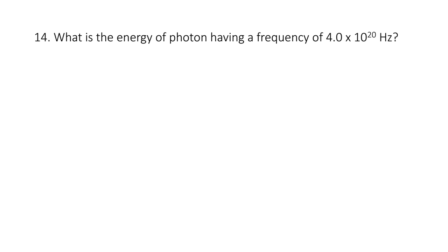What is the energy of a photon having a frequency of 4.0 × 10²⁰? E = hν. Now, in the original notes I gave you 6.626 × 10⁻³⁴ as Planck's constant, but for some reason I started using 6.62. We have to go back to the correct number — 6.626 — because that's what I used for the test calculations. If you use 6.62 you'll be a little off.